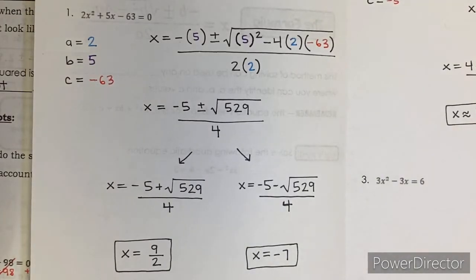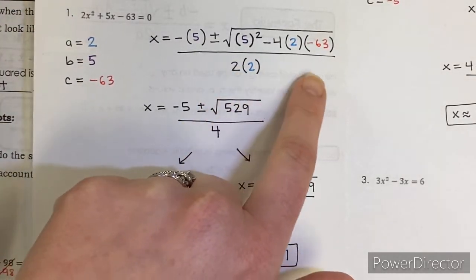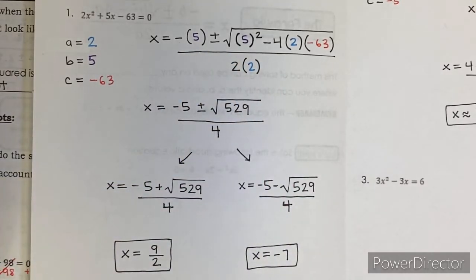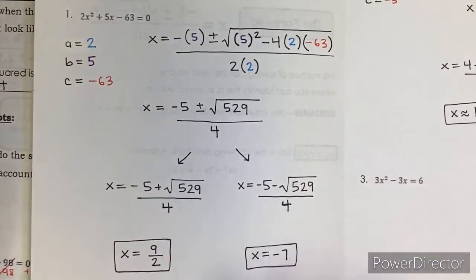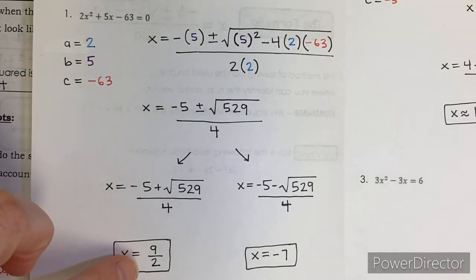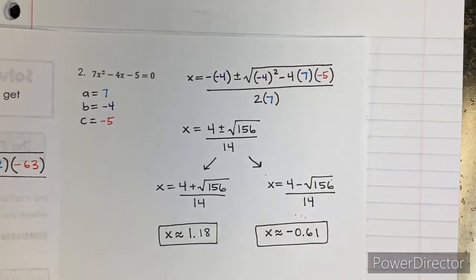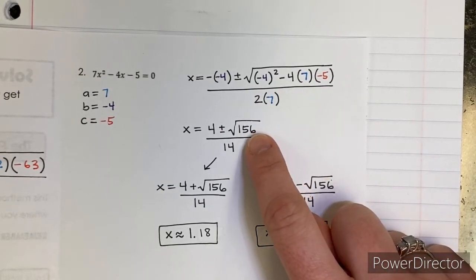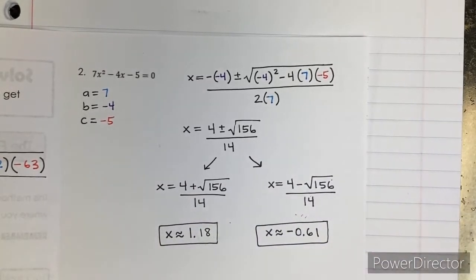Here are the correct answers for one and two on the inside. I used color so you could easily spot which letters are which. Same idea — you plug it in, make sure you have parentheses, and your first goal is to simplify the number on the inside of that square root. Then split it up and use your calculator from there. You'll always have a calculator for these types of problems. For number one, we should have got nine over two and negative seven — if your calculator gives you a fraction, leave it as a fraction. For number two, I simplified the inside to get 156, then split it up, got decimals, and rounded to the nearest hundredth.